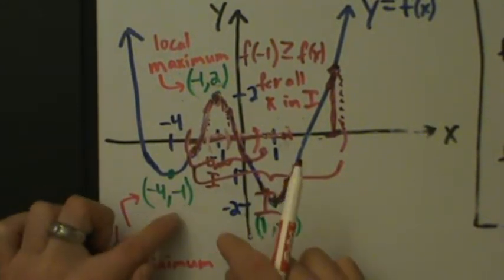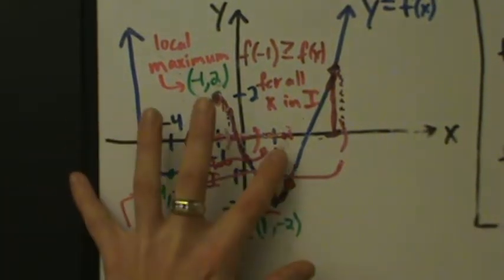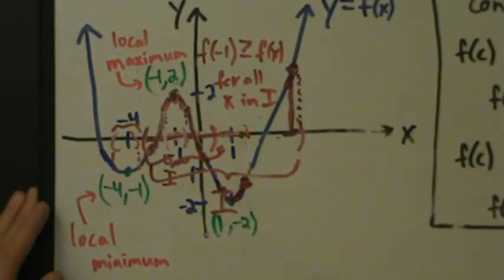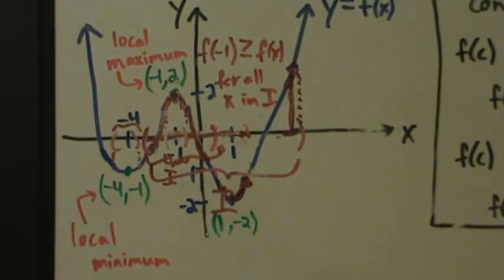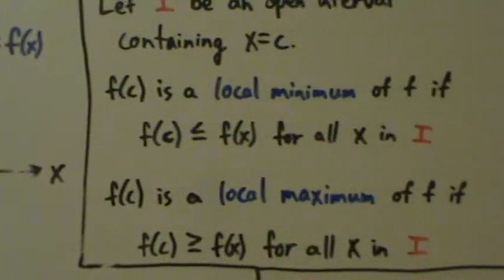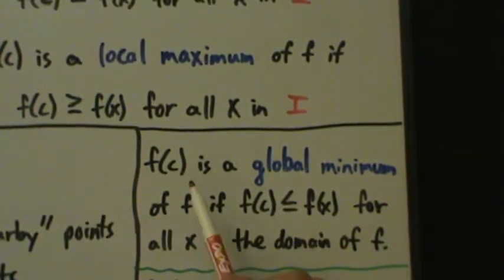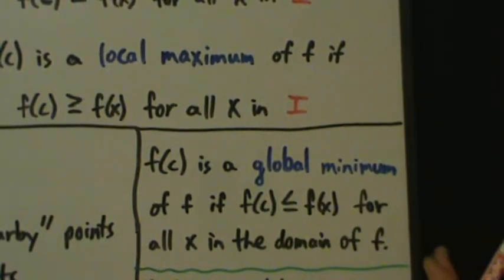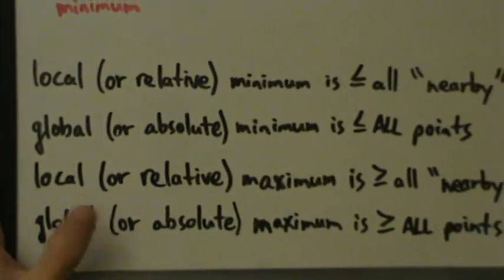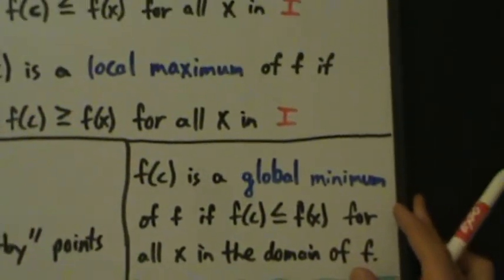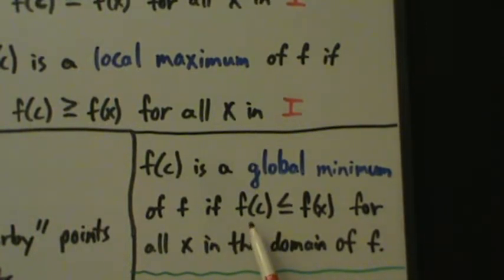The same thing is going to happen at negative 4, negative 1 — pick an open interval i and go through the definition, and you'll see that this is a local min. That's the theoretical background for local mins and local maxes. For global mins and maxes, they're more straightforward. f of c is a global minimum of f if f of c is less than or equal to f of x for all x in the domain of f — basically it's just the smallest point.